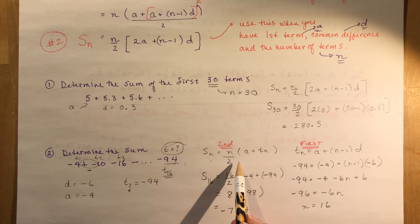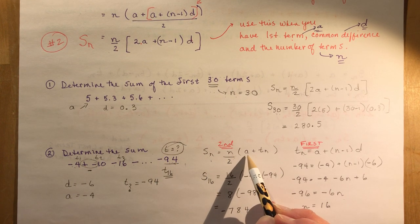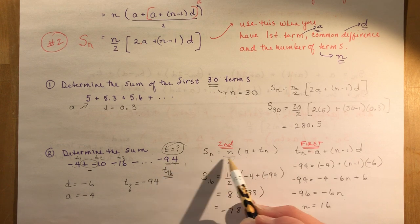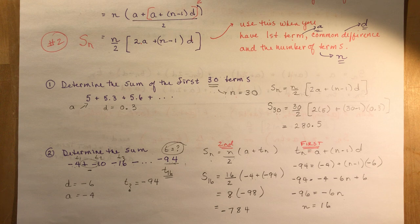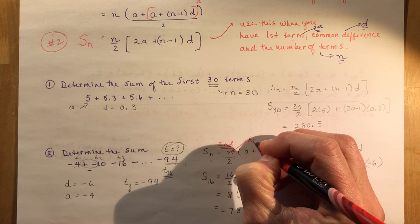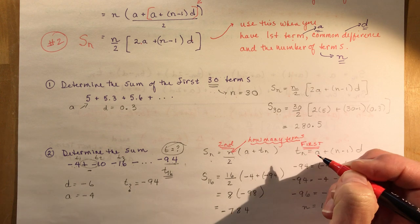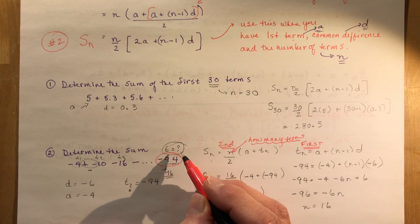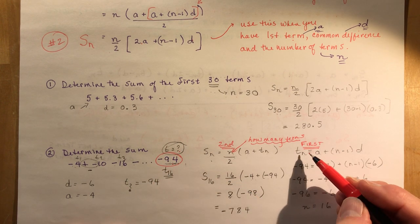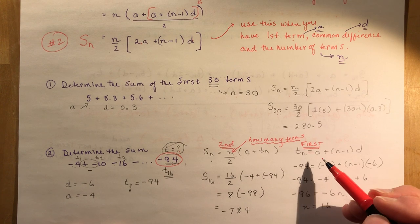If you look at the formula where you have the first and last terms, you would have seen that you're missing the n value. You have the first term, you have the last term, but you don't know how many terms you have. So that was the problem — you need to know how many terms. I know the value of the last term but I don't know what number term it is. We got d is minus 6, a is minus 4, but I need to know what term is negative 94.